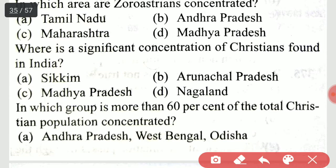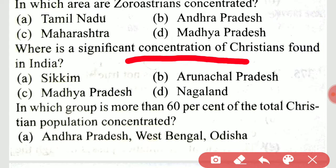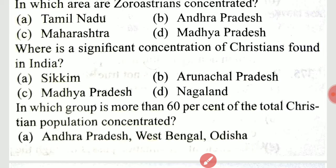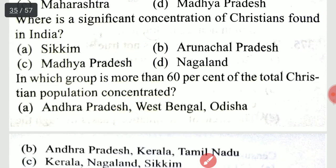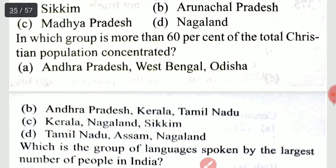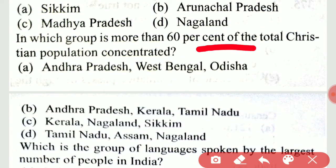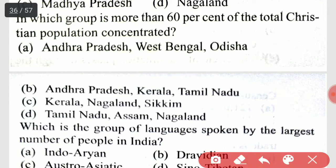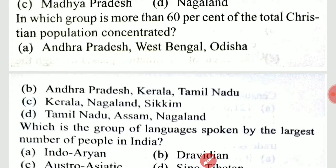What is a significant concentration of Christians found in India? Nagaland. In which group is more than 60% of the total Christian population concentrated? Andhra Pradesh, Kerala, and Tamil Nadu.